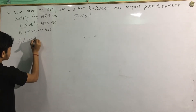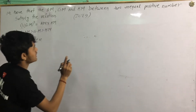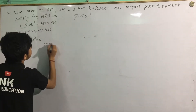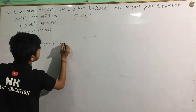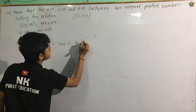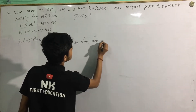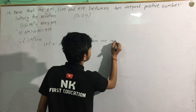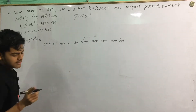We will find the same relationship between two unequal positive numbers. So let A and B be the two positive numbers.